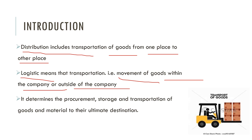Logistic means transporting goods — it determines the procurement, storage, and transportation of goods and materials to the ultimate destination. Procurement means having the raw materials from the suppliers, which is movement from supplier to manufacturer. Storage means storing that raw material in your warehouse or go-down. Then transportation of goods and materials to the ultimate destination means after having finished goods, you transport from manufacturer to the ultimate customer. So that is called logistic.